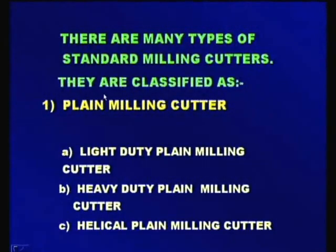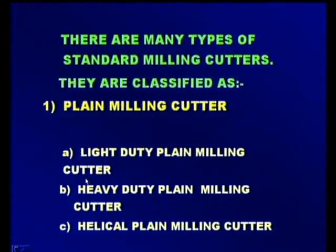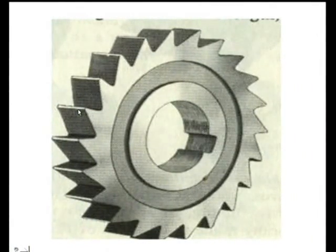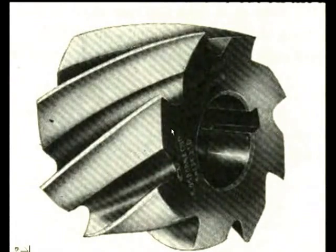Standard milling cutters are classified as plain milling cutters: a light duty plain milling cutter, a heavy duty plain milling cutter, and a helical plain milling cutter. A light duty milling cutter has parallel cutting edges and cannot take heavy cuts. When the width of the cutting edges is more and they are helical to the axis, they can take deeper cuts and machine at a higher rate — these are heavy duty milling cutters with helical edges making some angle.